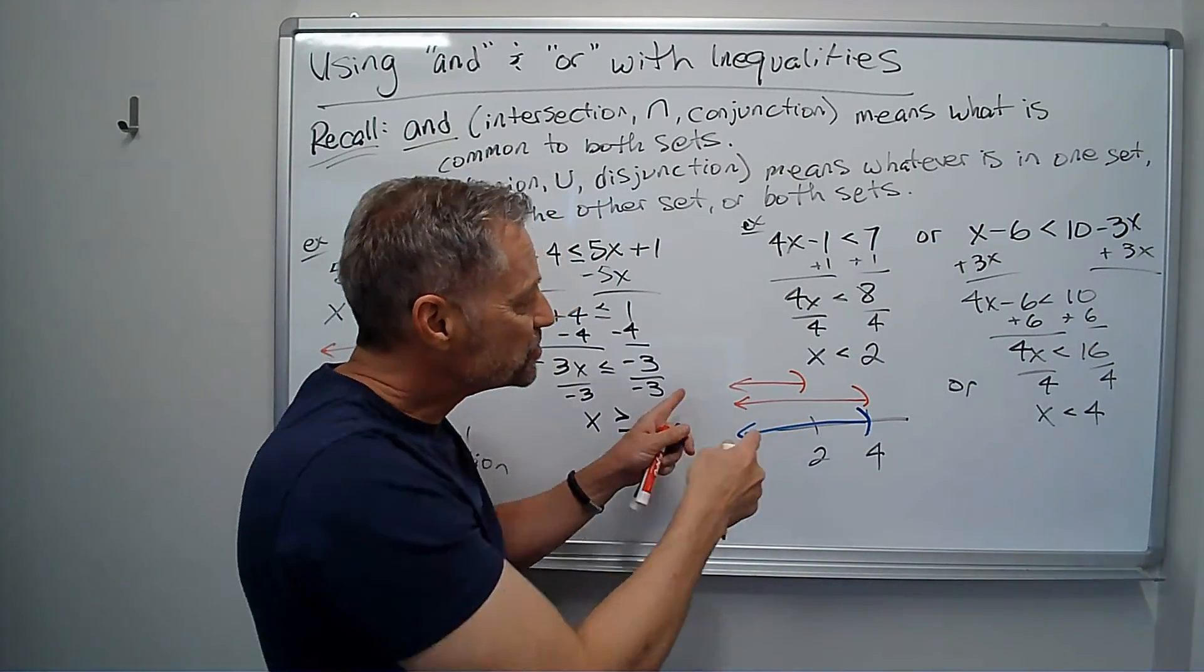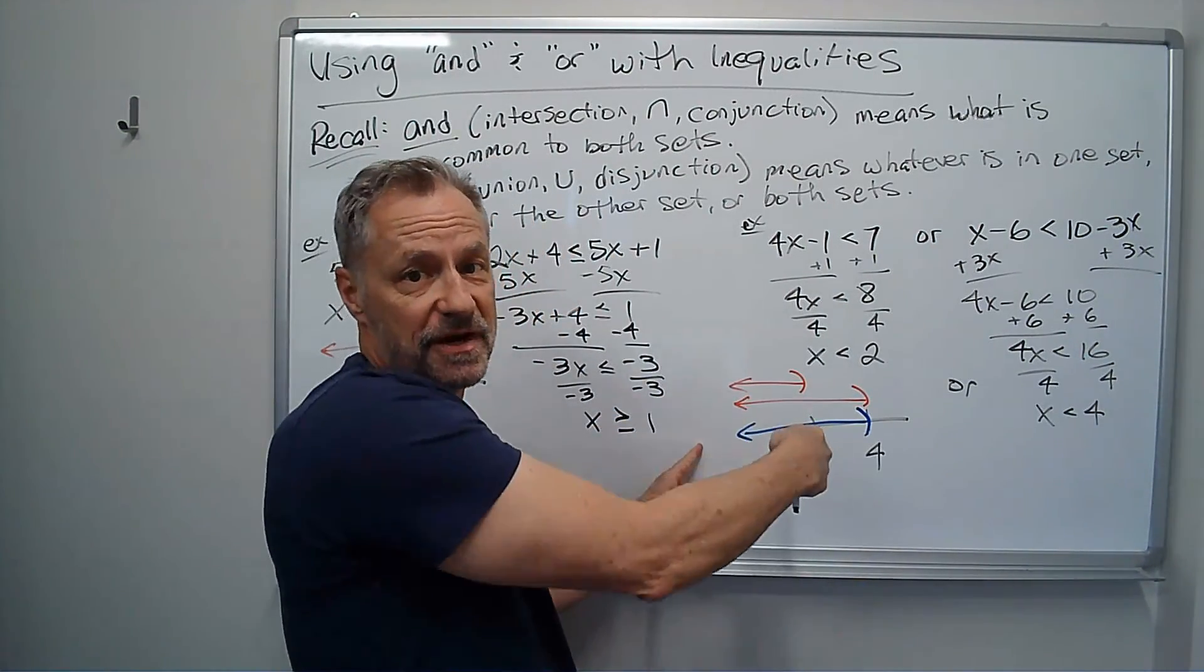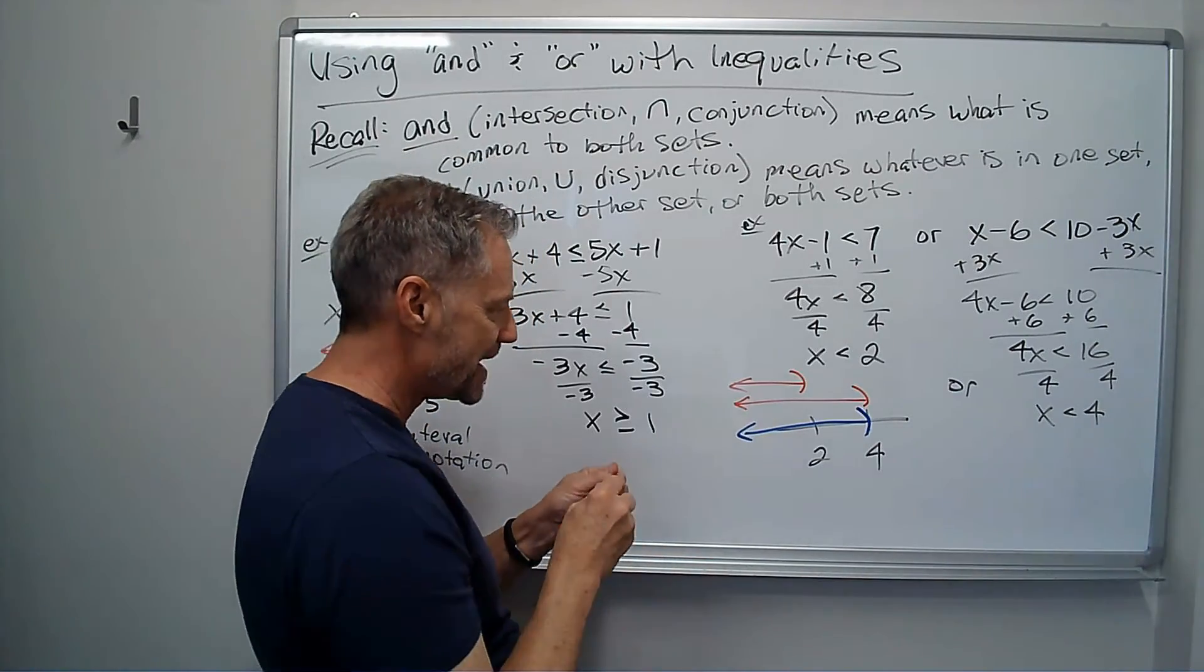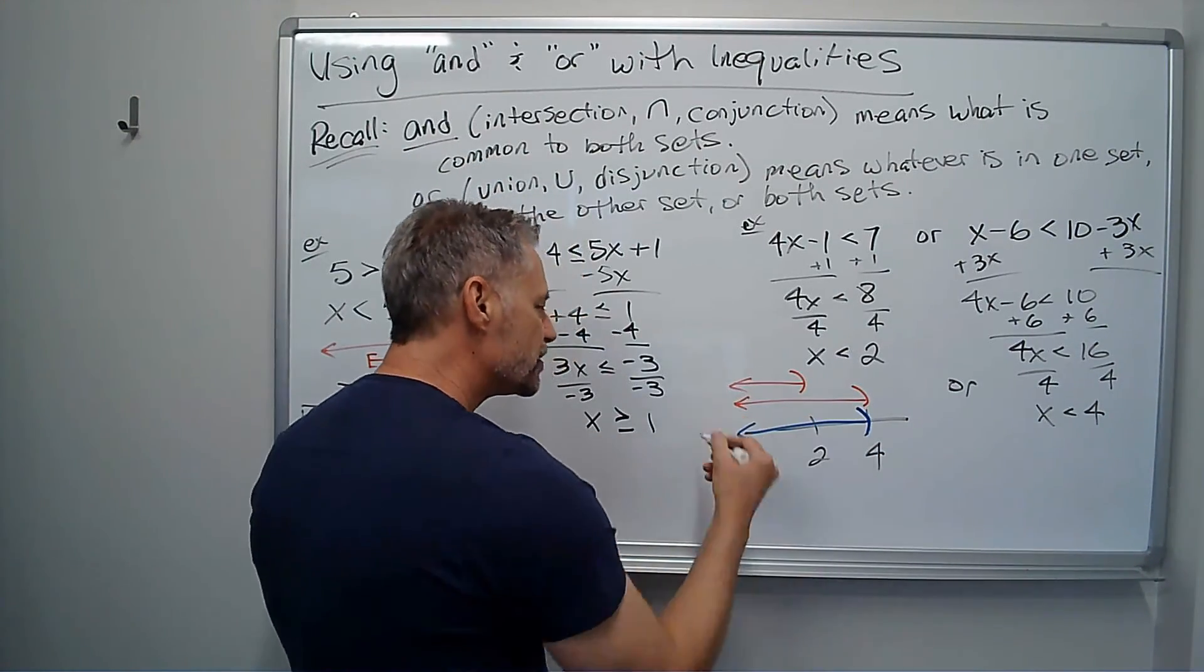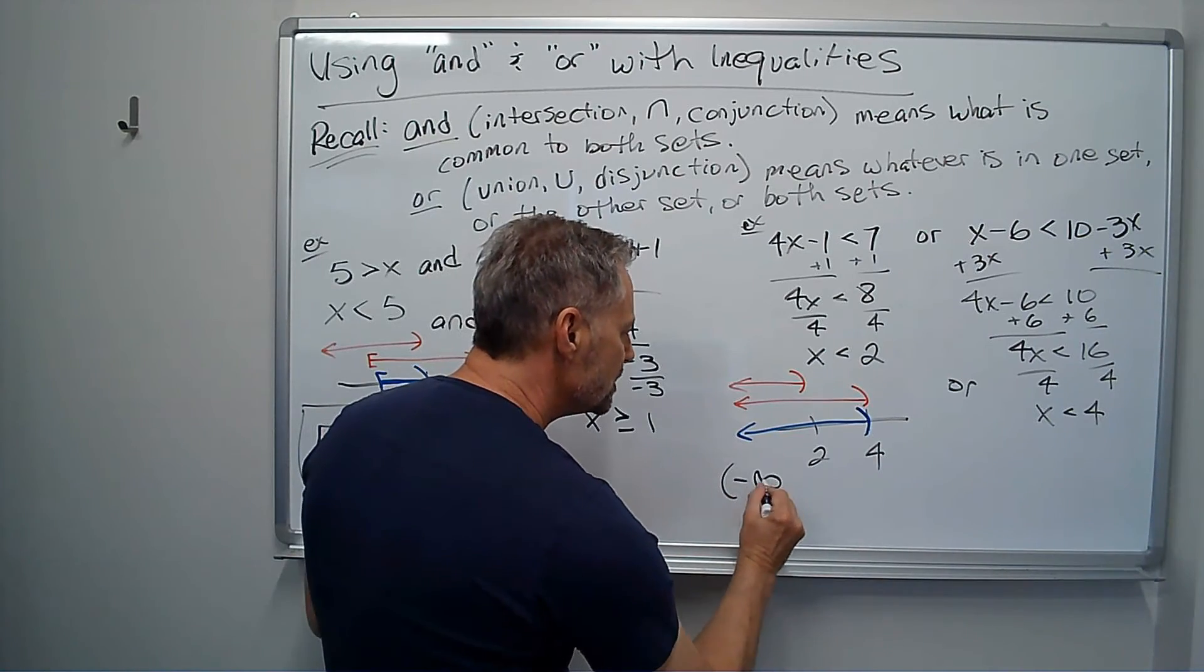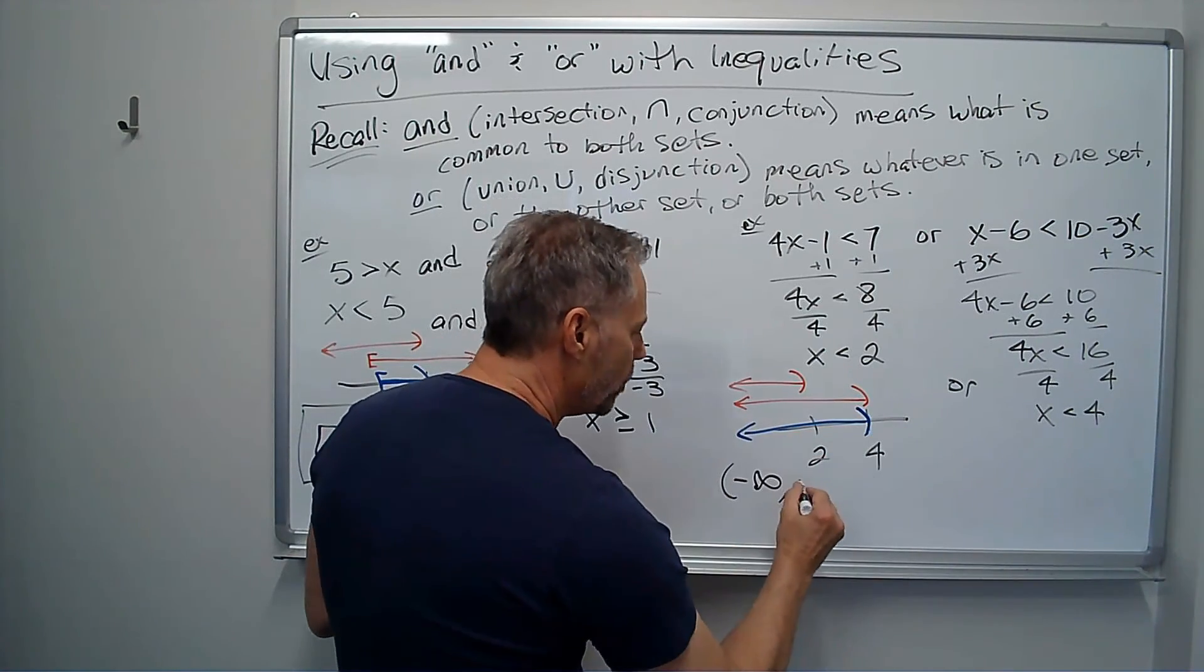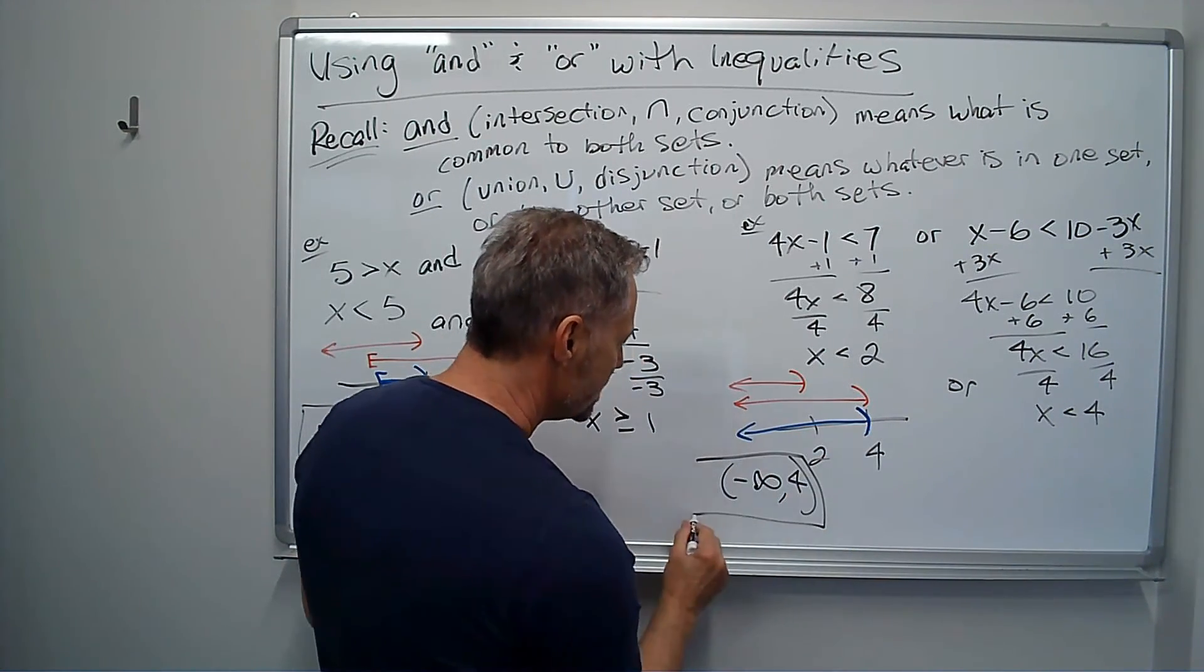So again, if this was an and, it would just be 2. It would be negative infinity to 2. So, my answer, again, is just going to be this. Now, this time, it goes to the left forever, so I use negative infinity. All the way to 4, with a parenthesis. And that's my answer.